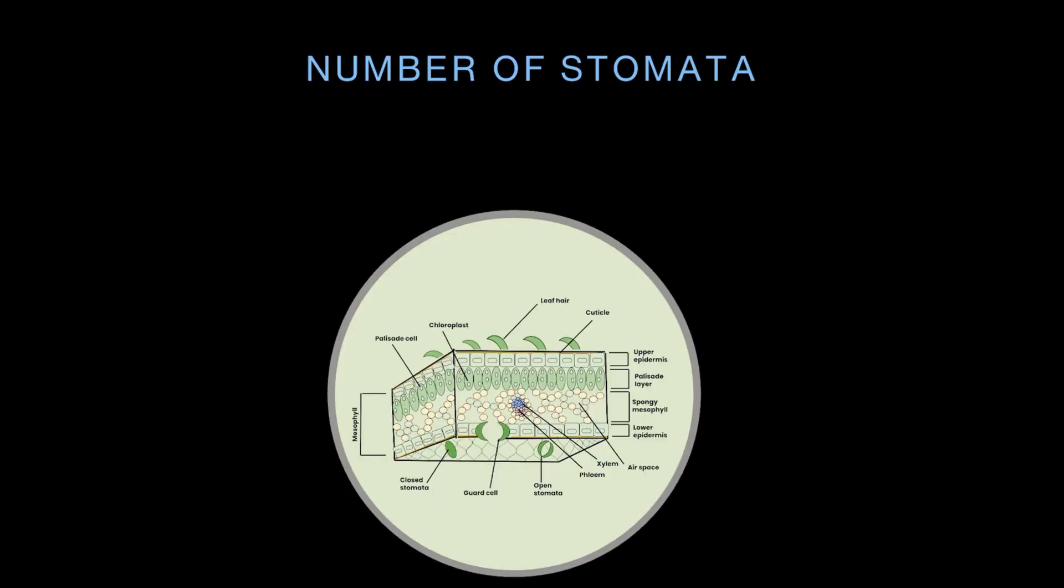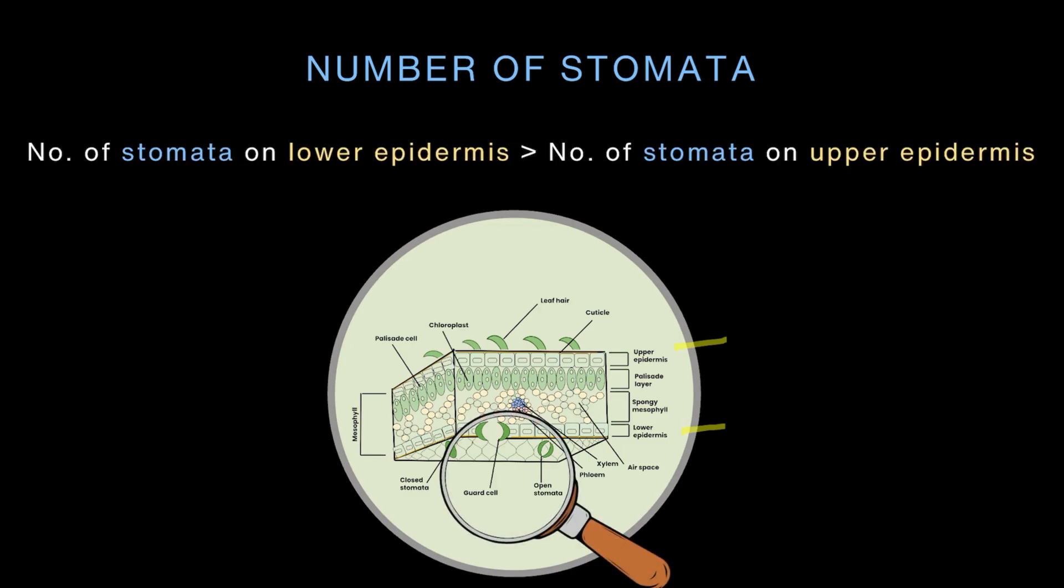The stomata is present both on the upper and the lower epidermis. It is just that the number of stomata on the lower epidermis is much more as compared to the number of stomata on the upper epidermis. Why do you think that's so?